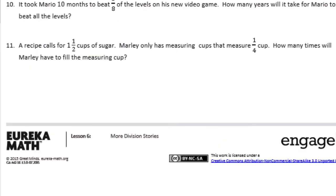Number 11: A recipe calls for 1 and 1 half cups of sugar. Marley only has measuring cups that measure a fourth cup. How many times will Marley have to fill the measuring cup? We're going to take 1 and 1 half and divide it by 1 fourth, because we want to know how many 1 fourths are in 1 and 1 half. I'm going to turn this back into an improper fraction. So we'll have 3 halves, because 1 and 1 half is equal to 3 halves, divided by 1 fourth.